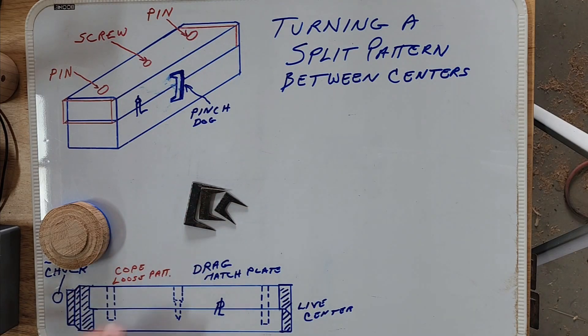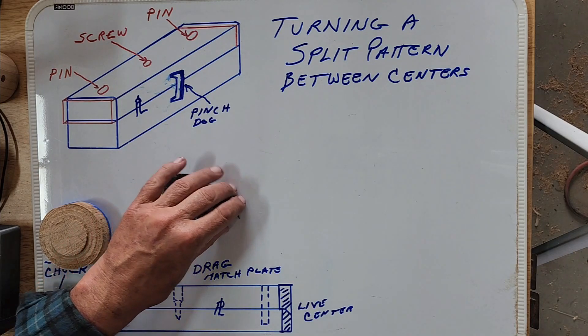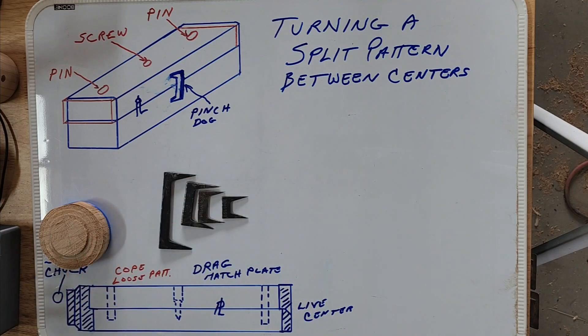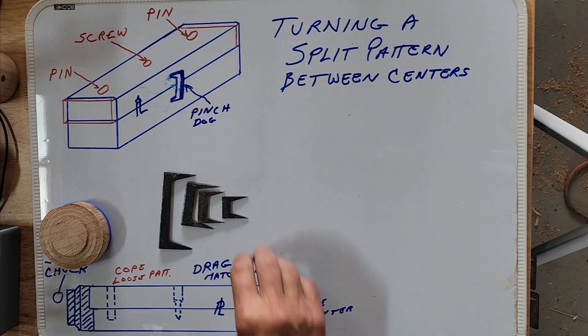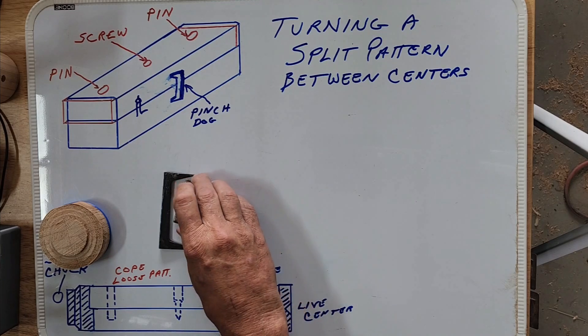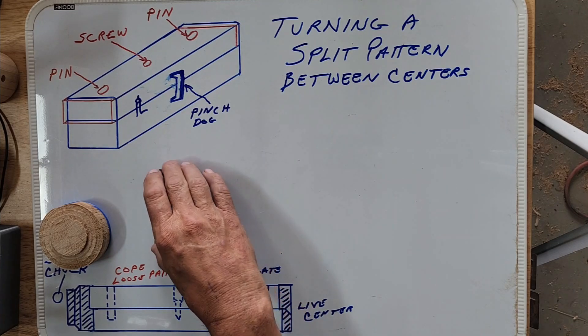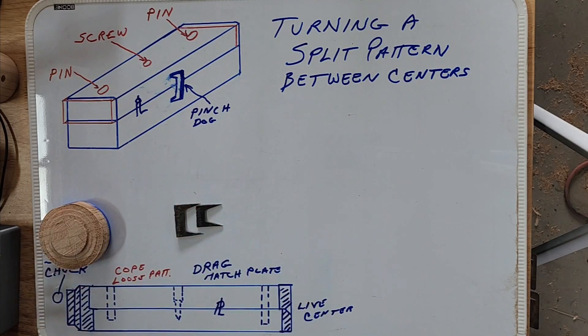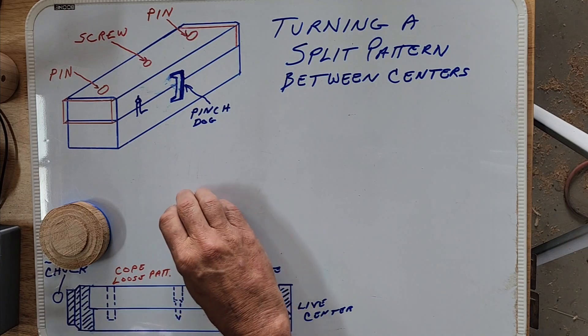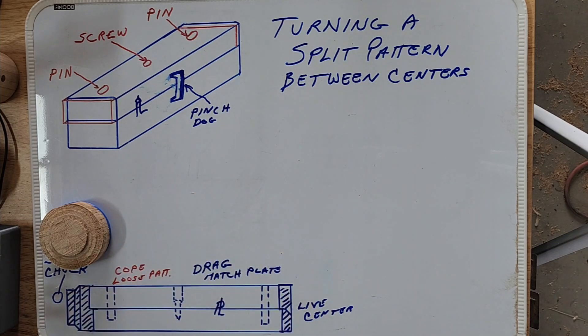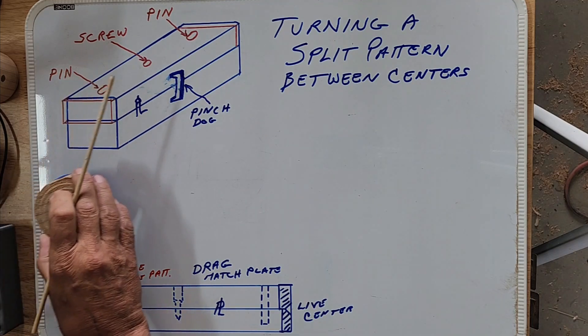These are pinch dogs. You'll have various sizes depending on the size job you're working on. They hold the work together very well. When you're done with them you just take them out, put them away someplace. You don't need clamps at this time. You clamp your stock together of course when you glue it up, but for this part you don't need clamps—a couple pinch dogs work great.